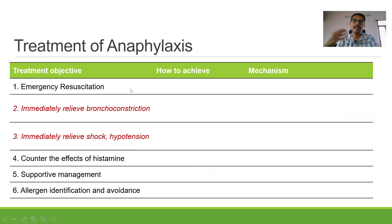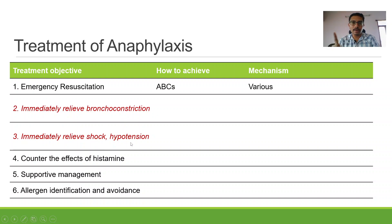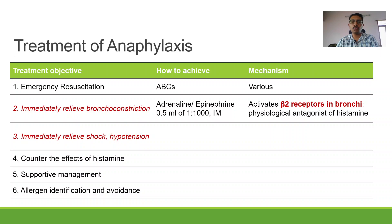First, there is emergency resuscitation. In any emergency, whether anaphylaxis or poisoning, you first have to do ABCs: airway, breathing, circulation. Beyond that, the two most important treatment goals when it comes to anaphylaxis are to immediately relieve bronchoconstriction and immediately relieve shock or hypotension. A single drug is able to do both of these, and that drug is epinephrine or adrenaline. The dose for adrenaline in the management of anaphylaxis is 0.5 ml — sometimes 0.3 to 0.5 ml — of a 1 in 1000 solution, and the route of administration is intramuscular.